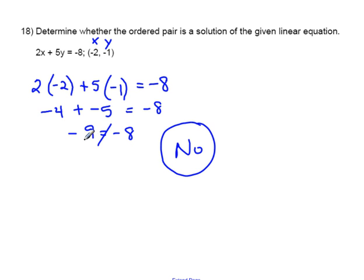If it was negative 8 equals negative 8, then it would be true, and yes, that point would be a solution. But in this case, it's not true, so therefore it is not a solution.